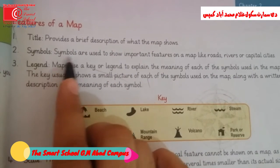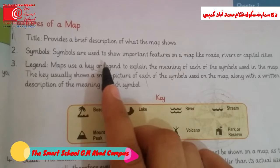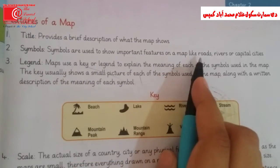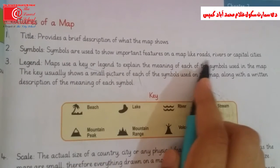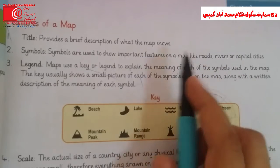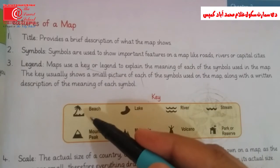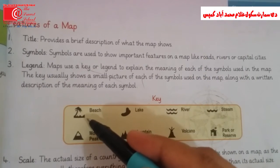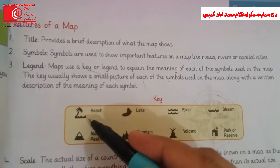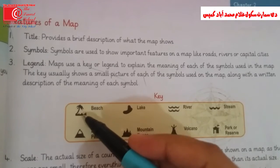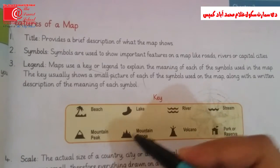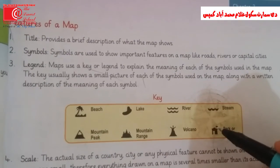The second feature is symbols. Symbols are used to show important features on a map, like roads, rivers, or capital cities. The different shapes which are made on the map are called symbols — like here, these shapes are symbols.